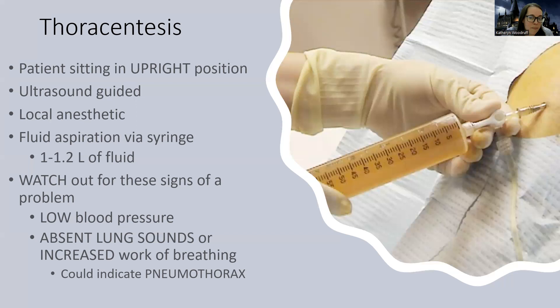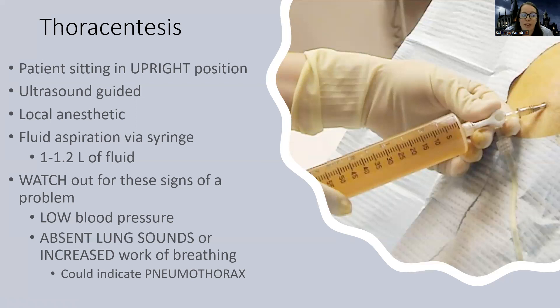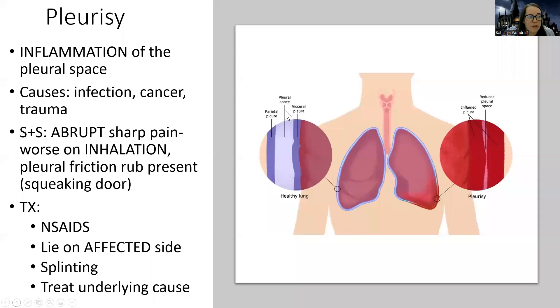After the aspiration, they may insert a pigtail or chest tube in the same place to continue draining fluid. The fluid gets sent off as a specimen to see what's growing. As the nurse, watch closely for low blood pressure since we're removing a liter of fluid, and watch for pneumothorax — absent lung sounds, increased work of breathing, or deviated trachea — as complications of the procedure.